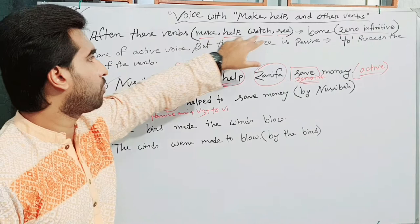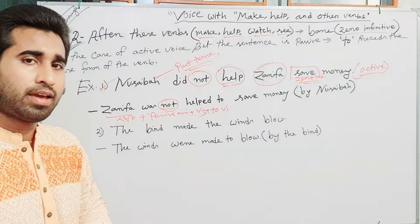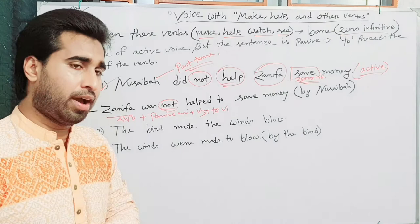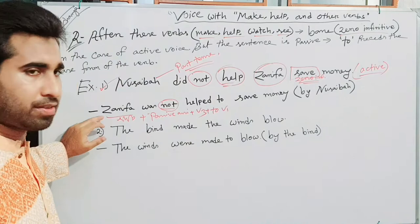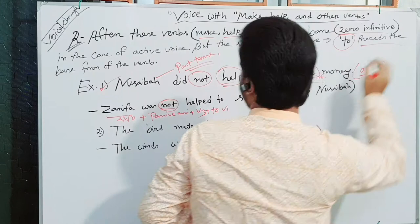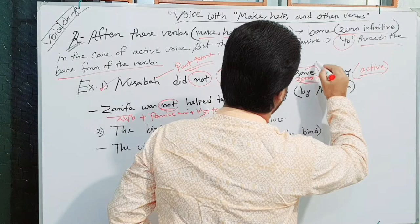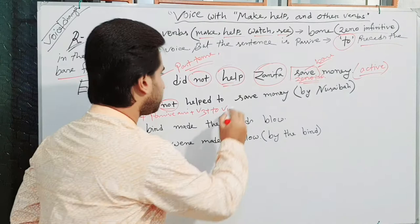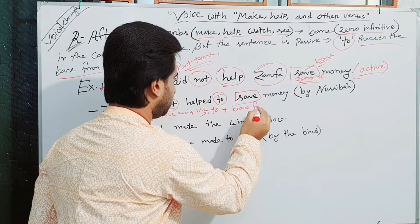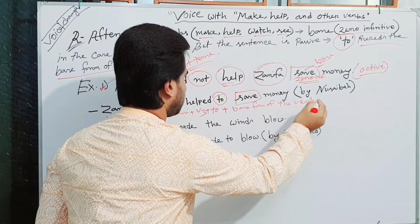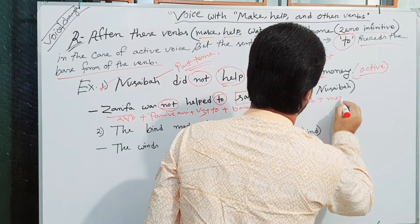In the case of make, help, watch, and see: when the sentence is active voice, after this verb, another verb is in the zero-infinitive or bare infinitive. But in the case of passive, when the sentence is passive, 'to' precedes the base form of the verb. So as 'save' is the base form of the verb — base or zero-infinitive — here 'to' precedes the base form of the verb. Plus, as usual, others — here is 'money'.